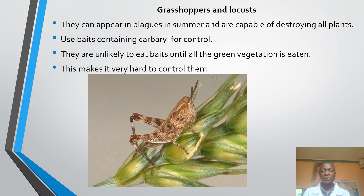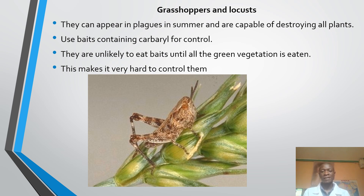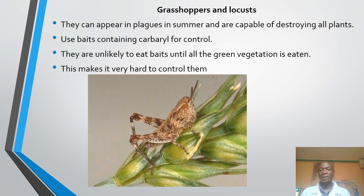Let's now talk about the grasshopper or the locust. They can appear in plagues and are capable of destroying all plants. You may remember that in 2019, the northern part of Kenya was attacked by these locusts. They attacked crops, destroyed plants of most farmers, and caused harm to all plants, eating every part of the plant.